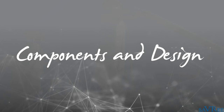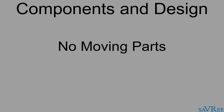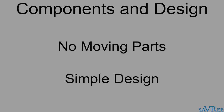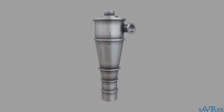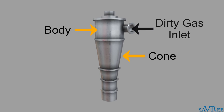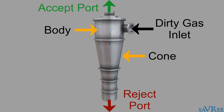A reverse flow cyclone separator is an industrial assembly with no moving parts and a simple design. The main cylindrical part is known as the body or barrel. The gradually narrowing conical section is known as the cone. Untreated gas enters tangentially through the inlet at the side of the separator. Entrained particles within the gas stream are separated and discharged through the reject port at the base of the separator. Clean gas exits through the exit port at the top of the separator.